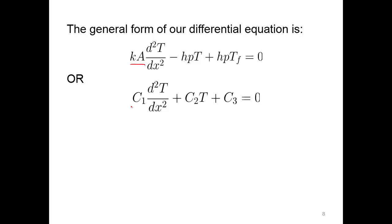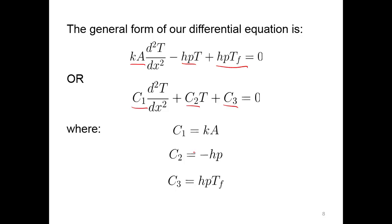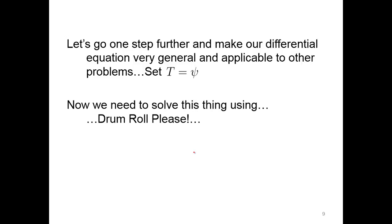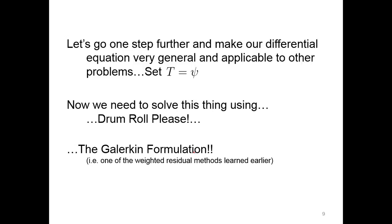If we take K and A and generalize to just say there's a constant coefficient, as well as with hP we have a coefficient — with the negative sign wrapped up in that coefficient — and then we have a constant, coefficient 3: that gives us A, minus hP, and the convection coefficient times the perimeter times the temperature of the fluid. Let's go further and make our differential equation very general and applicable to other problems. We're going to set the temperature equal to psi, and we need to solve this using — drumroll — a Galerkin formulation, one of the weighted residual methods discussed in the weighted residual presentation.